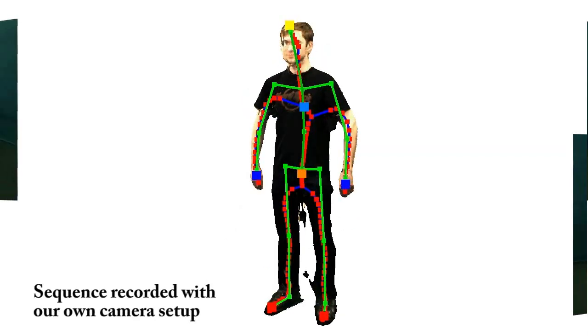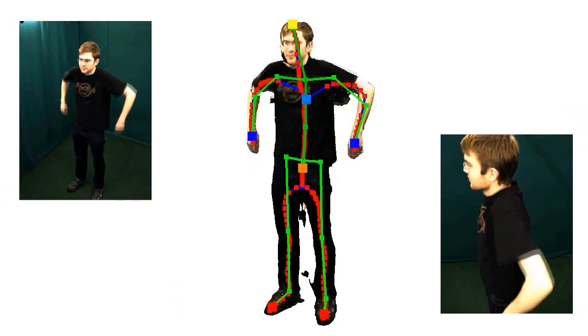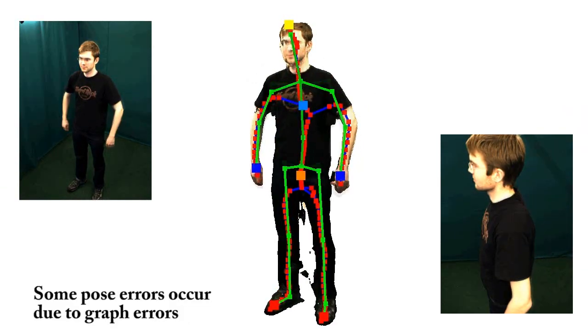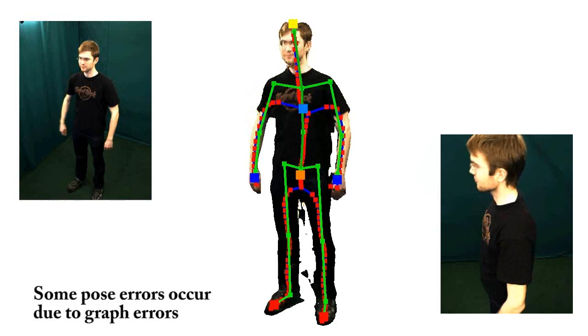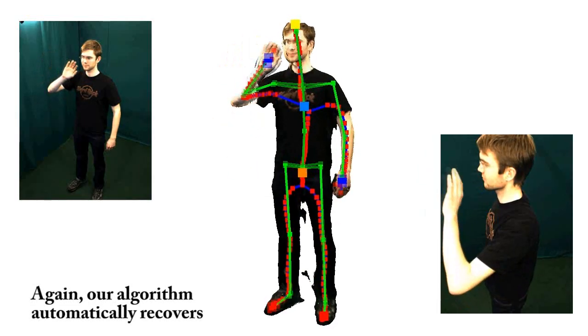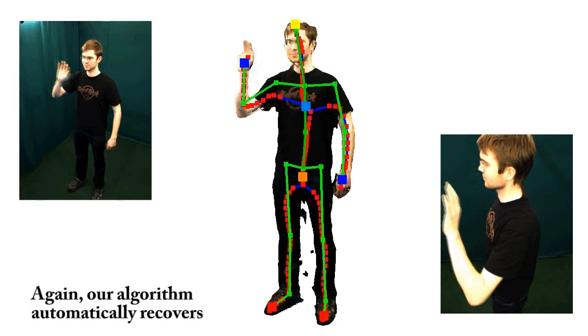Here we show a sequence recorded with our own camera setup. Again, in some frames pose estimation fails due to incorrectly labeled end nodes but our algorithm is able to recover fully automatically.